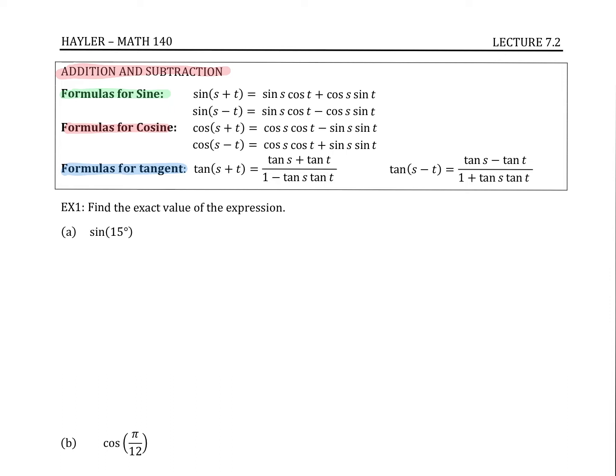There are two formulas for sine. One is for when you have addition on the inside of sine, and the other is for subtraction. The addition and subtraction follow over into the formulas. In the first parts of each, there's a sine, then a cosine, and then a cosine and sine for the top and bottom values.